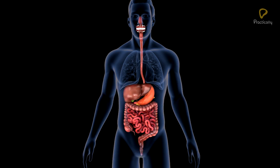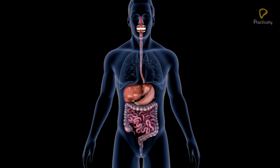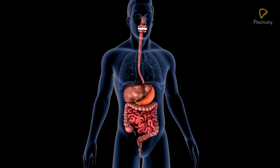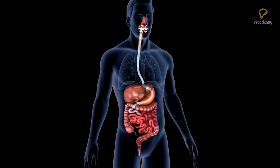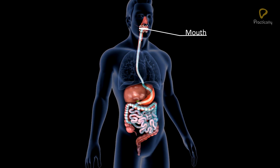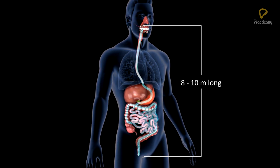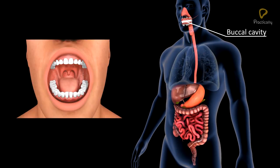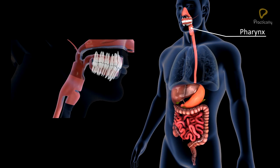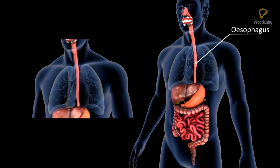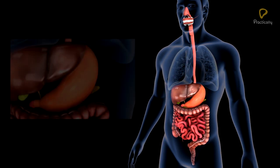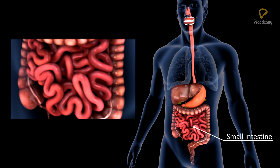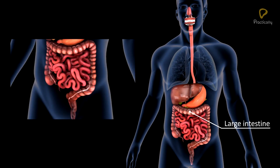The alimentary canal is also called the gastrointestinal tract or GI tract. It is a long, coiled, muscular tube extending between the mouth and the anus. It is 8 to 10 meters long and includes the buccal cavity, pharynx, esophagus, stomach, small intestine, and large intestine.